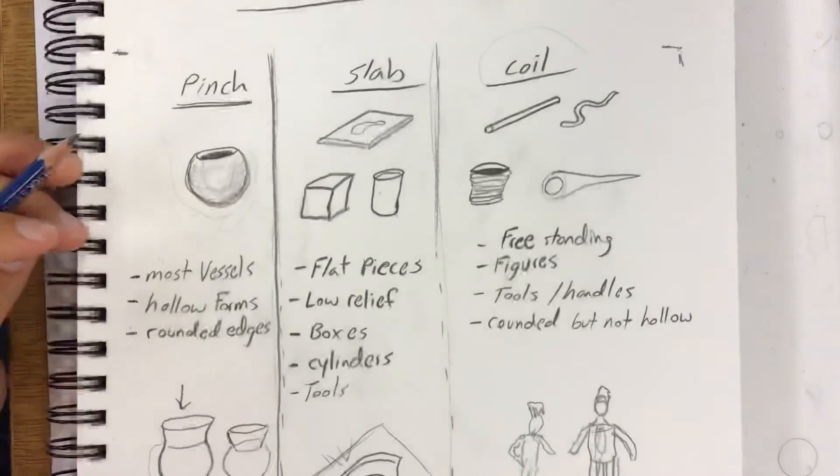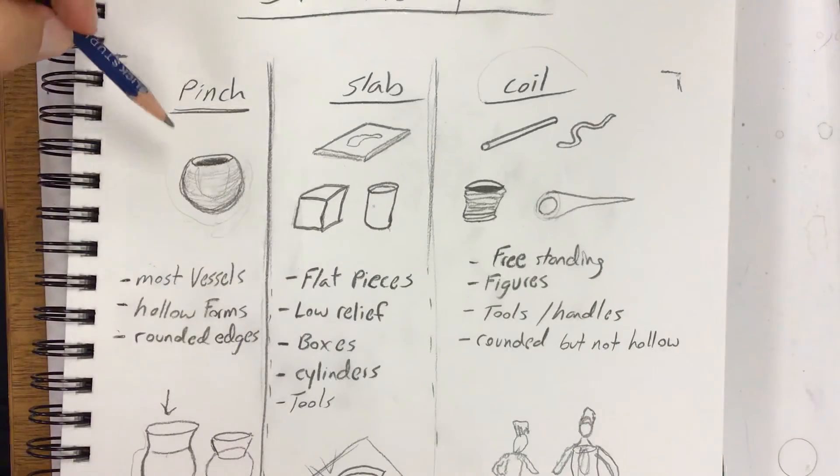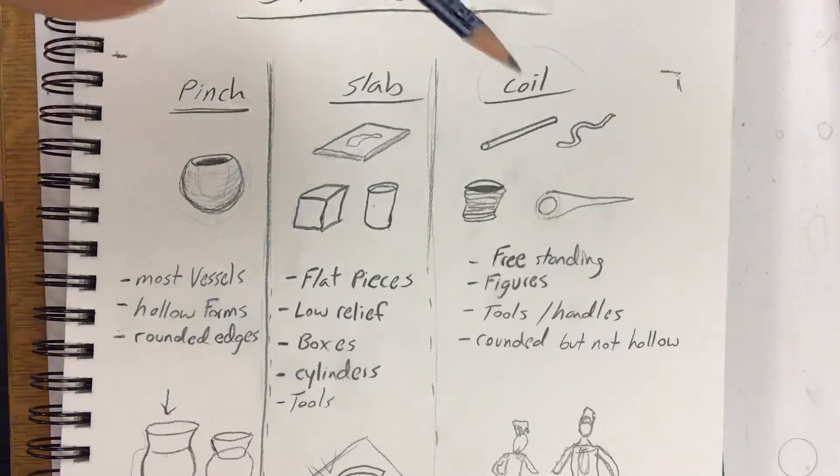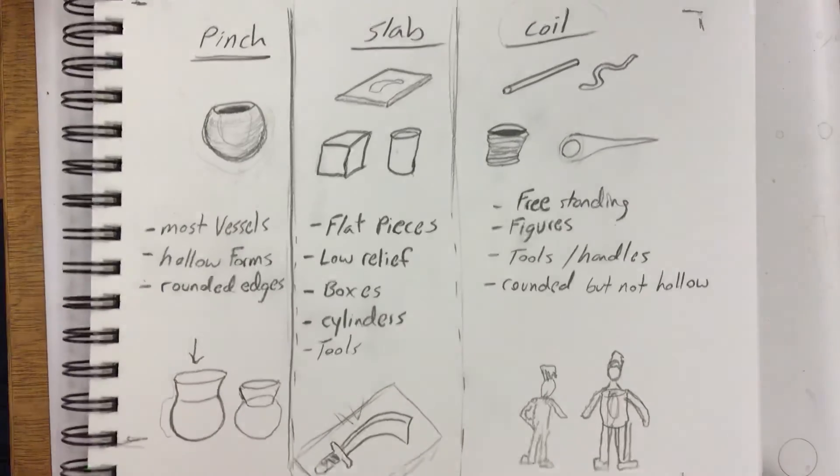So today, what I'd like for you to do is look at your sketch, decide and label this part's going to be pinched, this part's going to be slab, this part's going to be coil, and decide what technique is best for you.